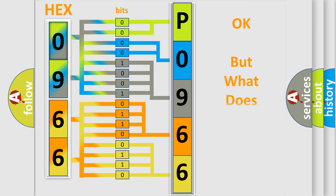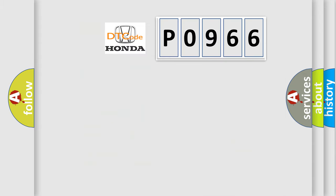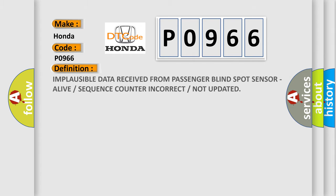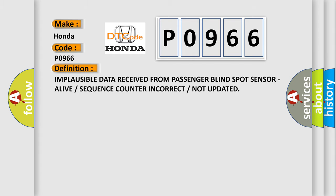We now know in what way the diagnostic tool translates the received information into a more comprehensible format. The number itself does not make sense to us if we cannot assign information about what it actually expresses. So, what does the Diagnostic Trouble Code P0966 interpret specifically for Honda car manufacturers? The basic definition is: implausible data received from passenger blind spot sensor, alive or sequence counter incorrect or not updated.